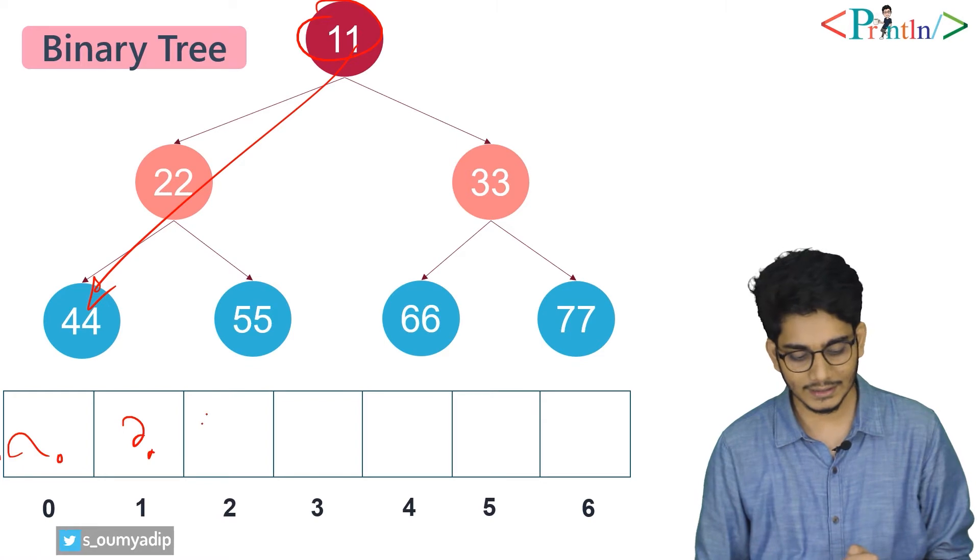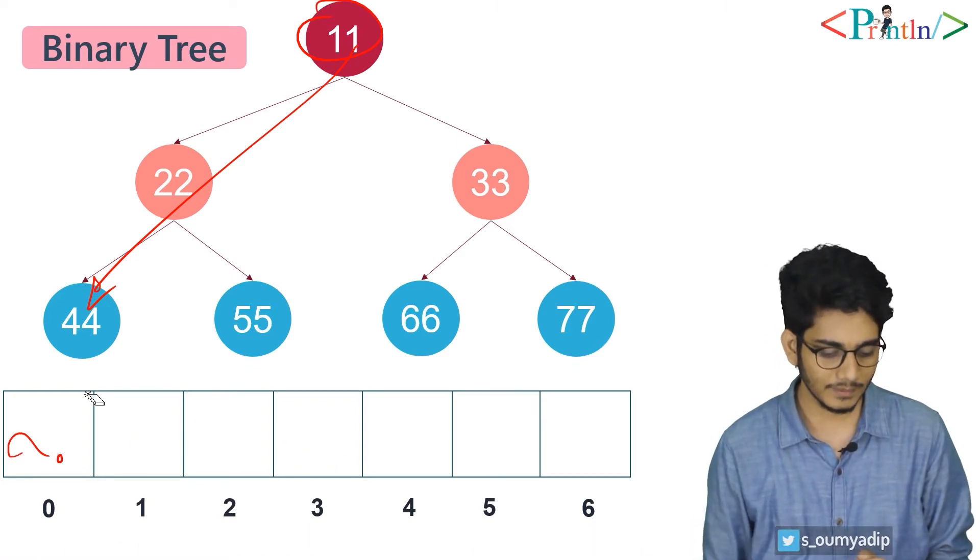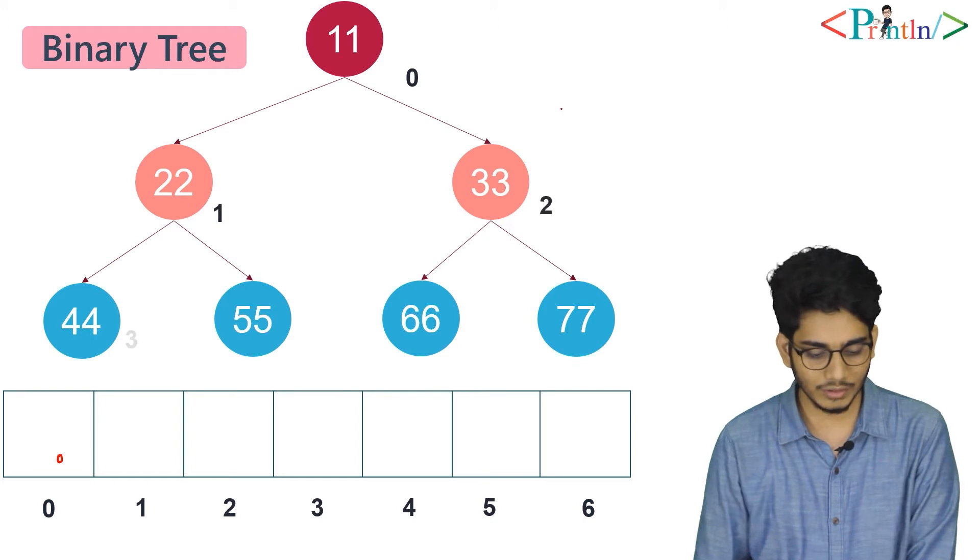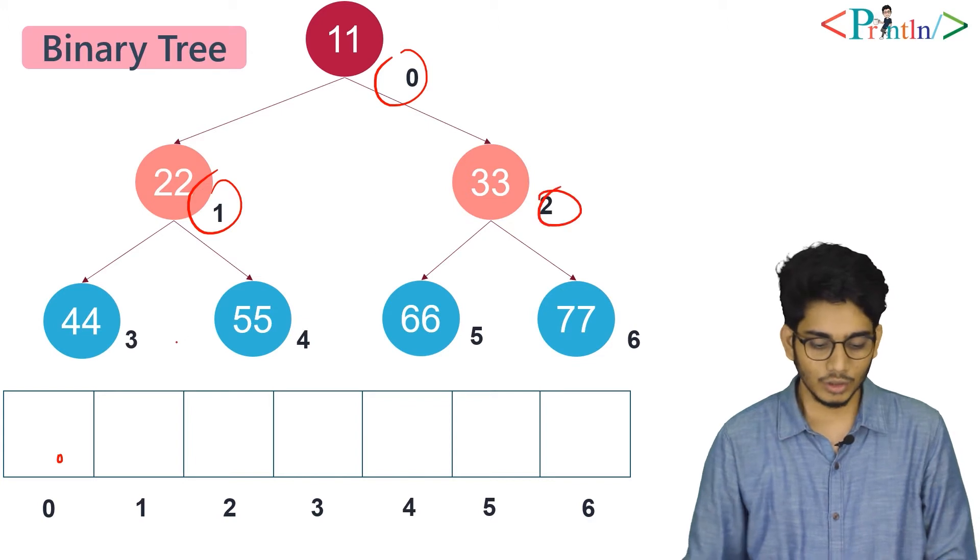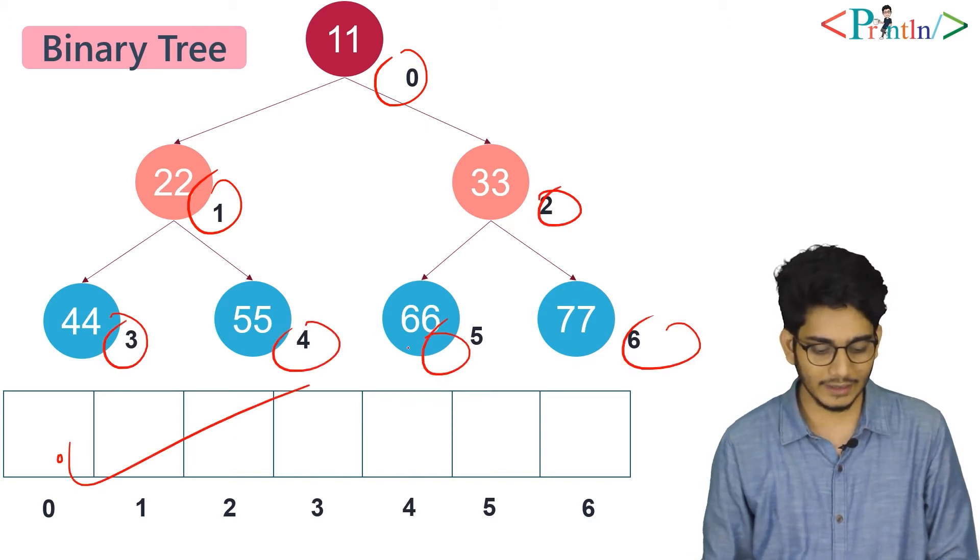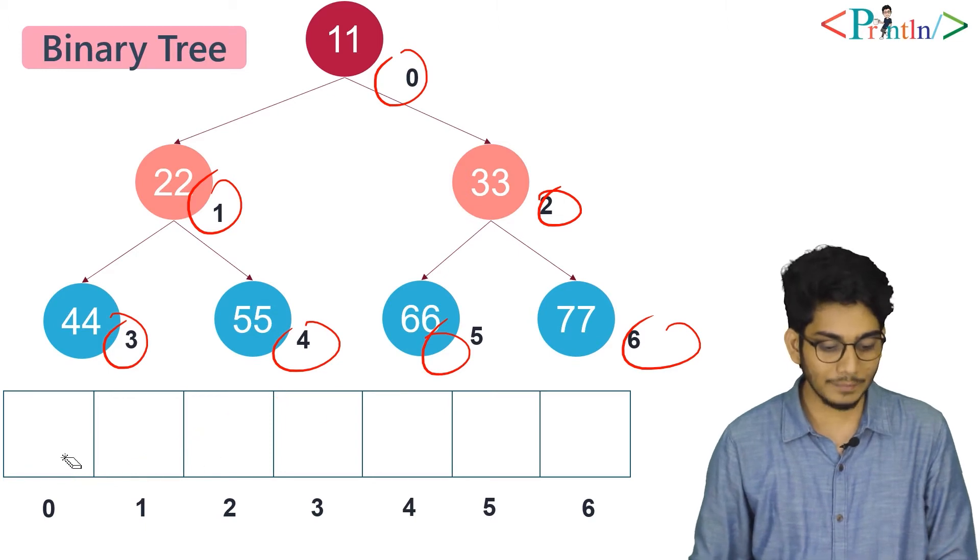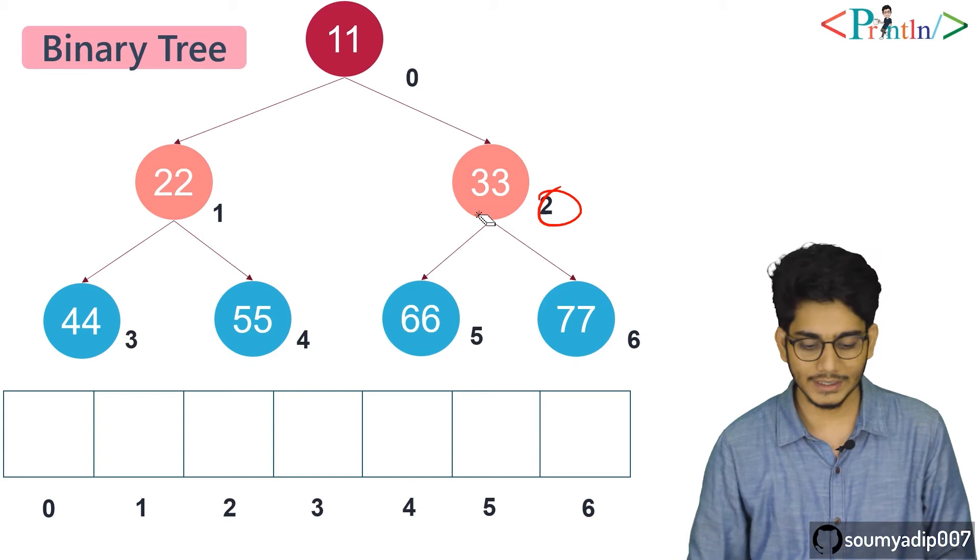How can we insert the elements? What is the logic? This is the zeroth node, one, two, three, four, five, six—these are the index numbers. We have to put each node at the given index. For that, we have a formula.